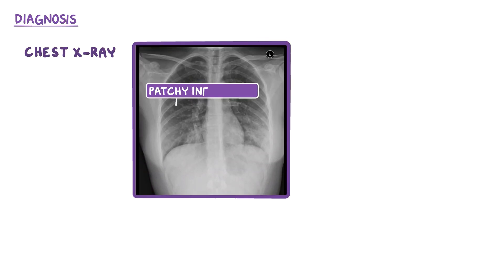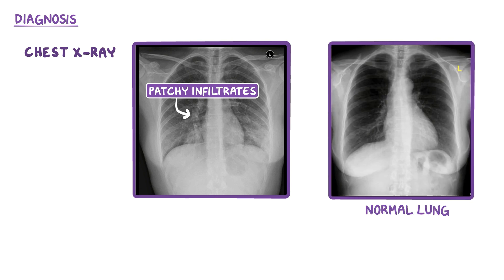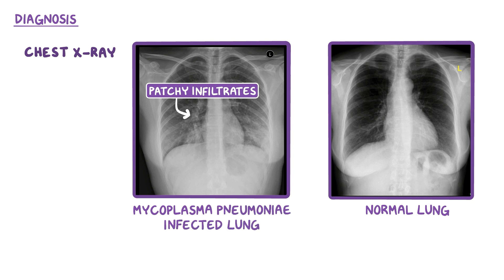Diagnosing a mycoplasma pneumoniae infection requires a chest x-ray, which reveals a patchy infiltrate that denotes severe infection — quite the discrepancy for something called walking pneumonia. For example, here's how a normal lung looks like, and in comparison, this is how a mycoplasma pneumoniae infected lung looks like.